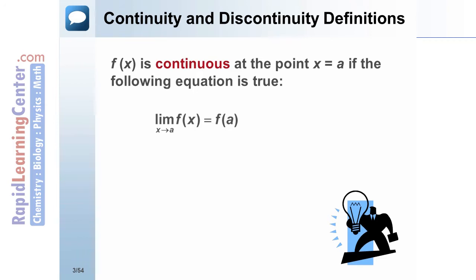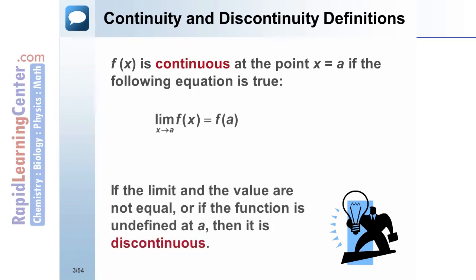So what would cause a function to be discontinuous or not continuous? The answer is if the limit and the function are not equal, or if the function is undefined at a, then the function is discontinuous at that point.